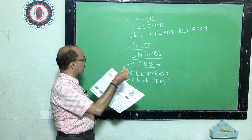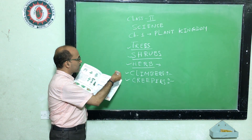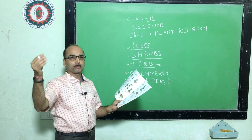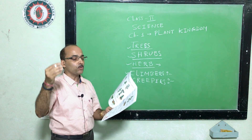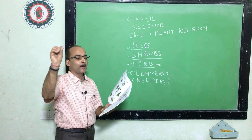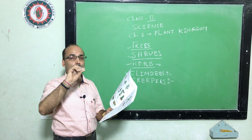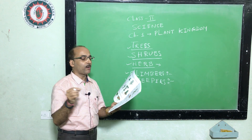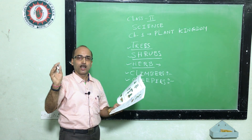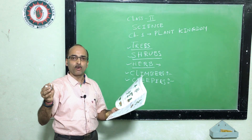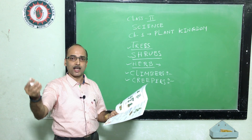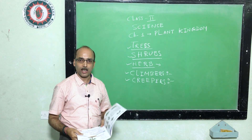Learn trees, shrubs, herbs, climbers, creepers, and the parts of the plant — this is very important for you. Draw the plant, label every part, and write the function of each part. Thank you for your class. Next we will see the exercises. Thank you.